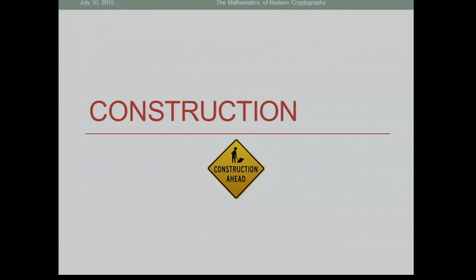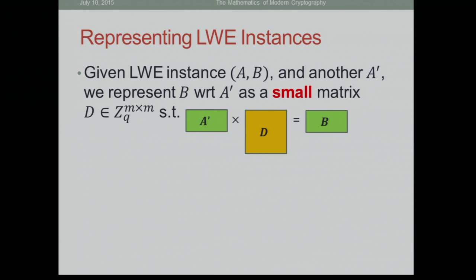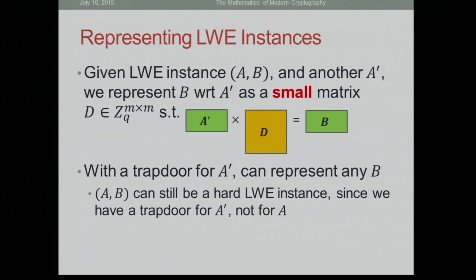The one new thing in this construction is a particular way of representing LWE instances. You have an LWE instance A, B — two matrices — and an auxiliary matrix A prime. We want to represent B relative to A prime by a small matrix D such that A prime times D equals B. We solve a small integer solution relative to A prime, which requires a trapdoor for A prime but not for A. So the LWE instance could still be hard.